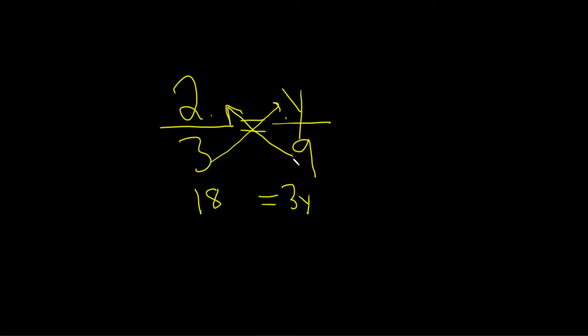Again, 3 times y is 3y, 9 times 2 is 18. You just make a cross. That's why it's called cross multiplication.